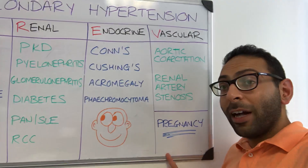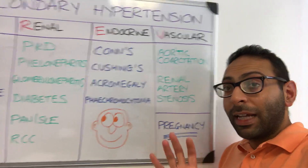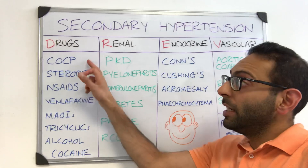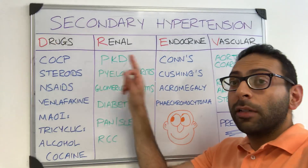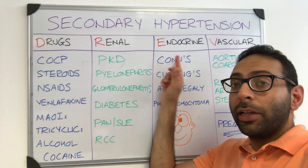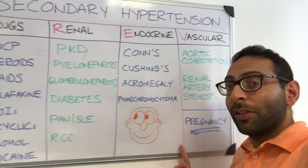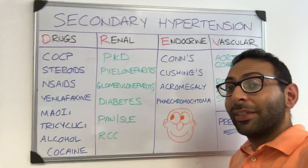And finally, don't forget pregnancy as a fifth category. So: D-R-E-V — drugs, renal, endocrine, vascular — and don't forget pregnancy as well. Hope this helps.